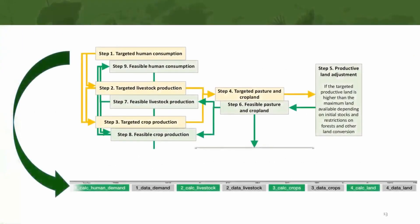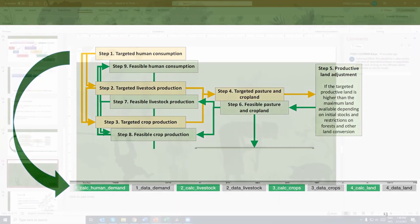The computation worksheets follow the order of the calculations shown in the previous slide. For example, in step 1, the model calculates human demand, and this is done in the green calculation worksheet labeled with the number 1, using data from the respective data worksheet labeled with the number 1 as well.